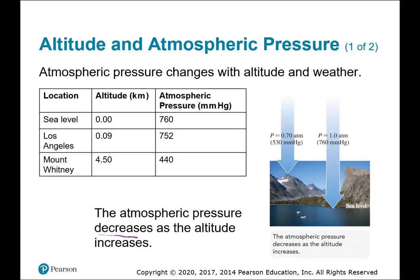Atmospheric pressure decreases as altitude increases. At the top of a mountain, pressure is 0.7 atmospheres or 530 mmHg. Down at sea level, pressure is one atmosphere or 760 mmHg. You can see the difference between Los Angeles and Mount Whitney.